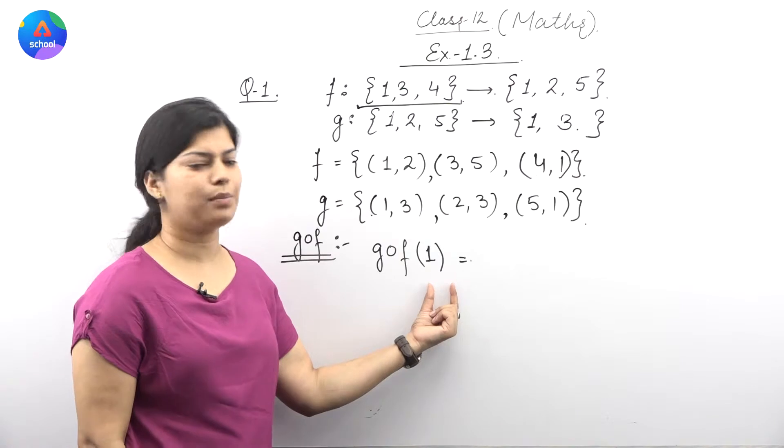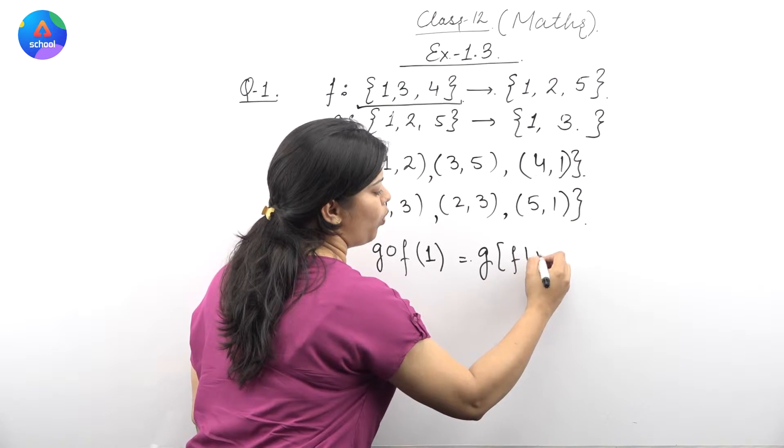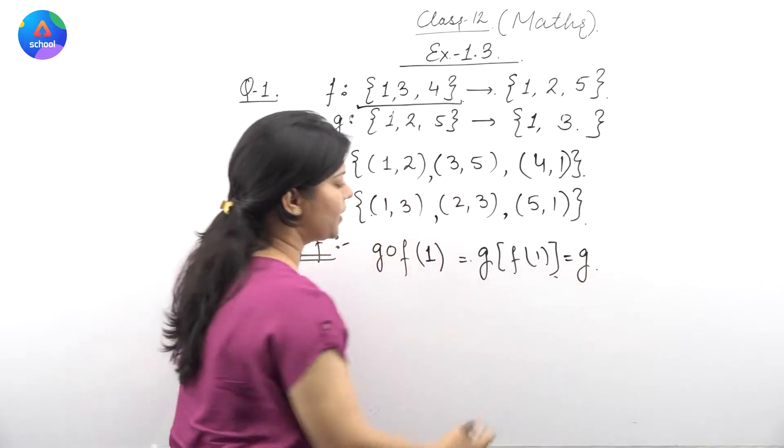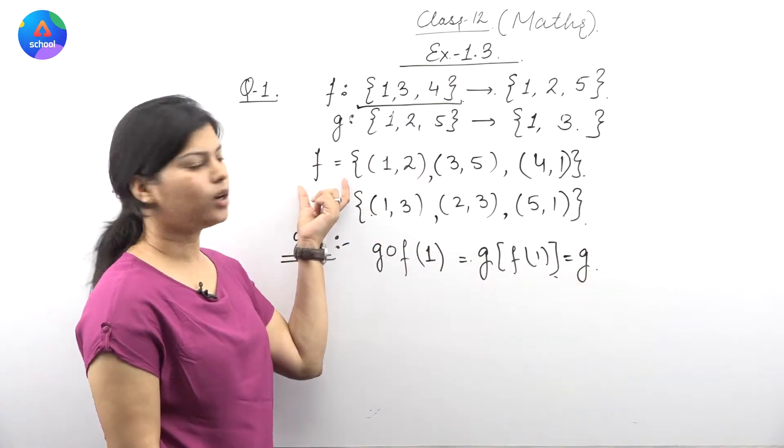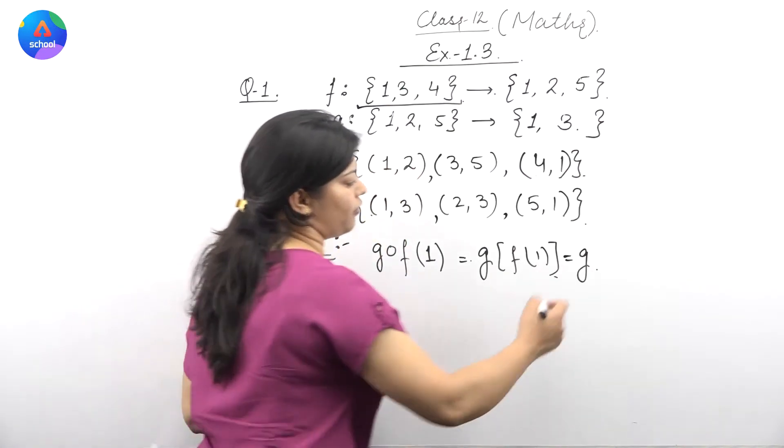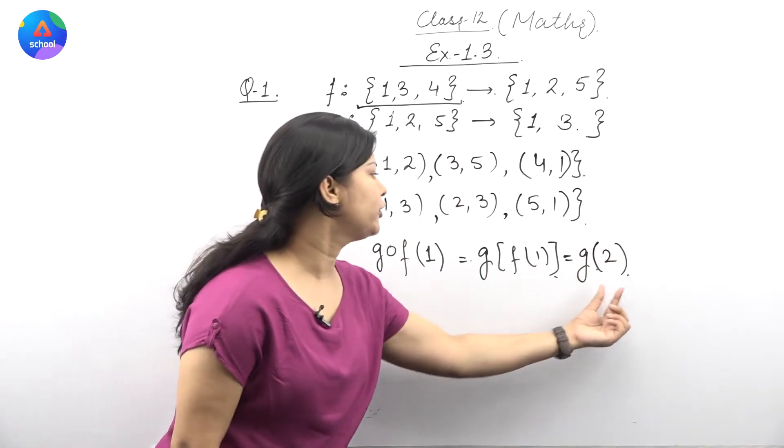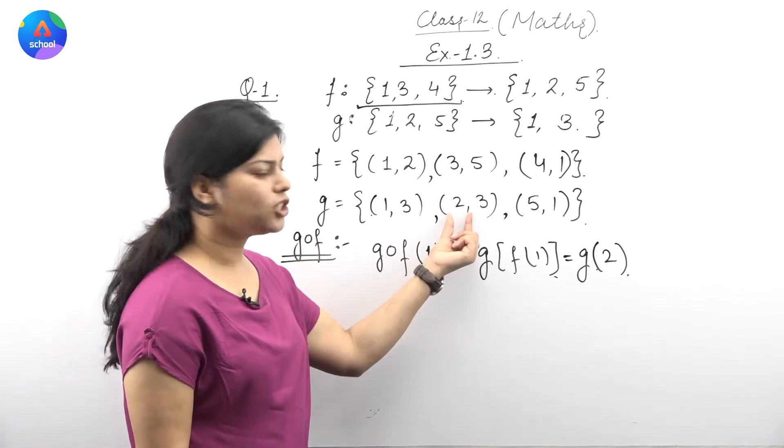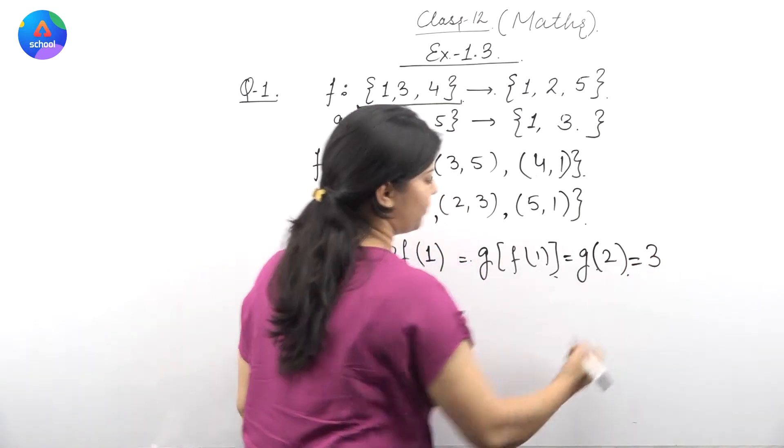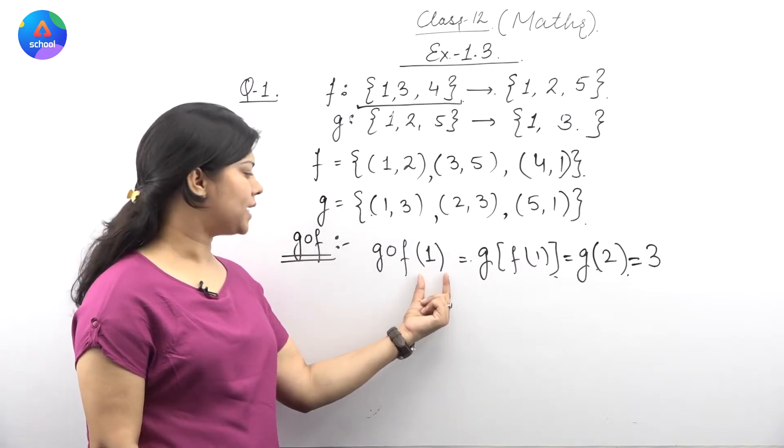Let's take the first element from the domain of F, that is 1. g∘f(1) equals g(f(1)). Now f(1), the image of 1 under F, is 2. So we get g(2). g(2), the image of 2 under G, is 3. So g∘f(1) equals 3.